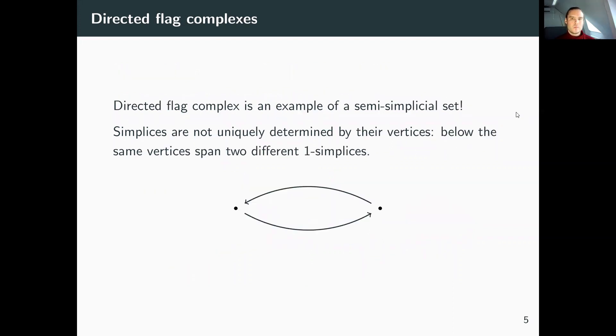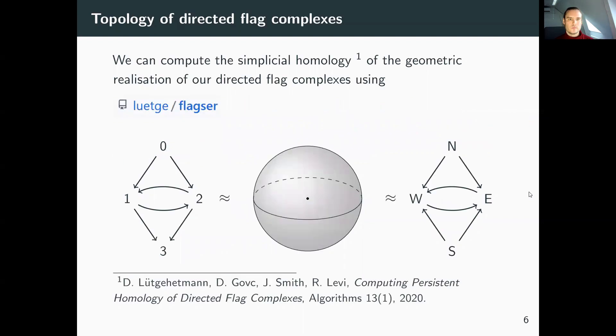A directed flag complex is not strictly a simplicial complex, it's a semi-simplicial set, because simplices are not uniquely given by their vertices. For example, we have two one-simplices spanned by the same vertices. Once we've constructed the directed flag complex, we can use software called flagger, which computes the simplicial homology of the geometric realization of our directed flag complex.